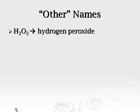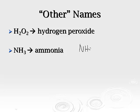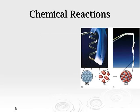Some other names we need to be familiar with: H2O2 is hydrogen peroxide. NH3 is ammonia, which is different from the ammonium ion, which is NH4 with a 1+ charge. That's ammonium, and that's it for part one.